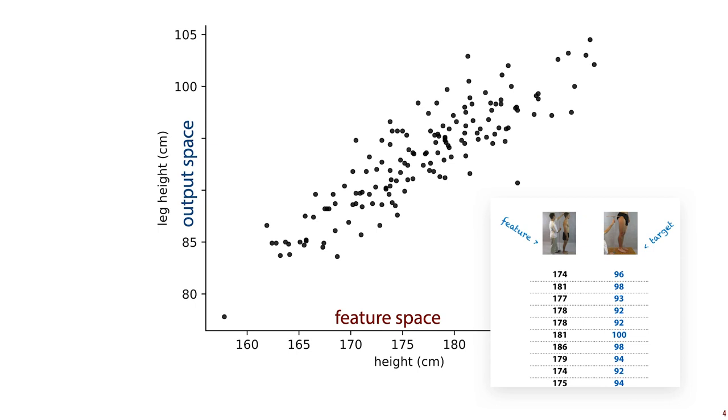For a large population of people, we measure their height as a single feature and the length of their legs as a target value. And if we plot that data, it looks like this cloud of points. And in this space, a line in this space is one way to predict an output value for every instance.